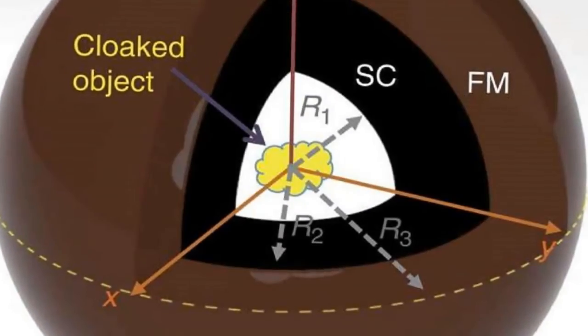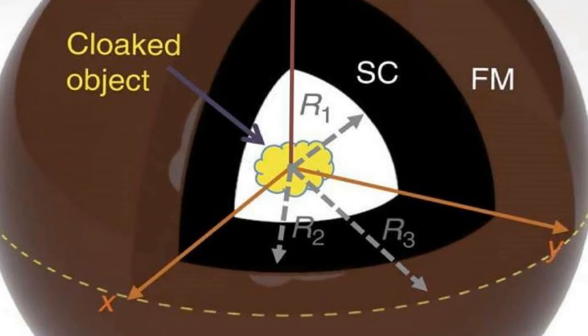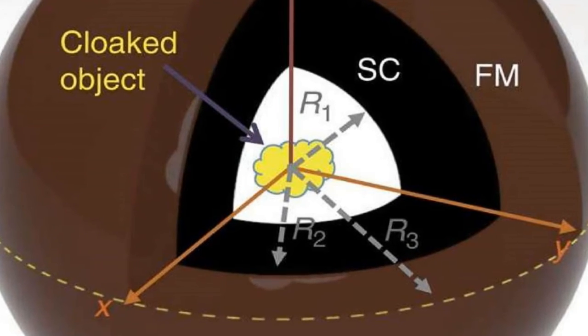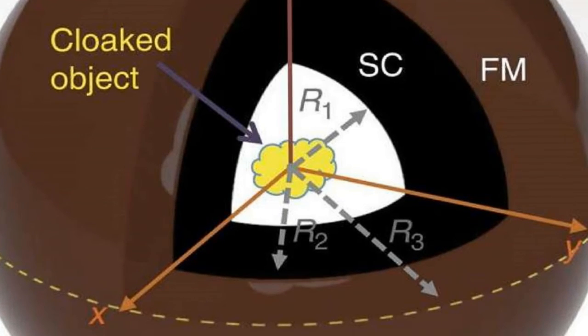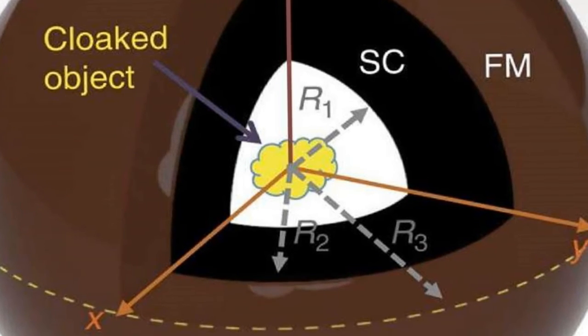A superconducting inner shell, made of single crystal YBCO, and a ferromagnetic outer shell, made of a nickel-zinc composite. These two materials have opposite magnetic behaviors.